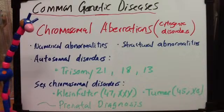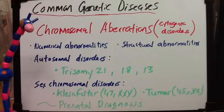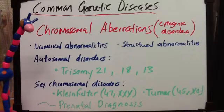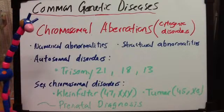Let's talk about numerical abnormalities. Euploidy is normal — 46, 2N. Polyploidy is 3N or 4N, and this would always result in a spontaneous abortion. Aneuploidy would also not be consistent with life. Trisomy is 2N plus 1, giving 47 chromosomes, which is compatible with life. Monosomy is 2N minus 1, which in autosomes is incompatible with life.